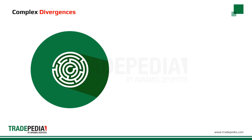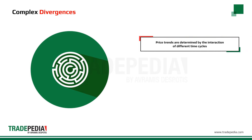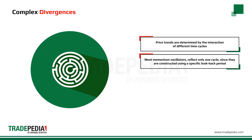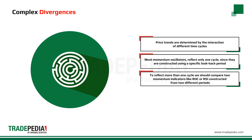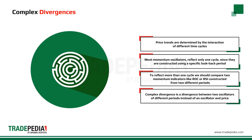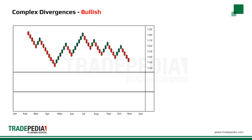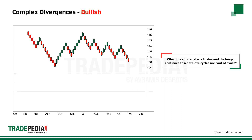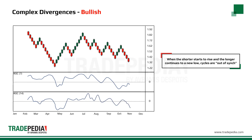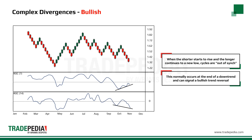Complex divergences. Price trends are determined by the interaction of different time cycles. Most momentum oscillators reflect only one cycle, since they are constructed using a specific look-back period. To reflect more than one cycle, we should compare two momentum indicators — like ROC or RSI — constructed from two different periods. The complex divergence is a divergence between two oscillators of different periods, instead of an oscillator and price. Compare two time spans separated by a substantial interval to reflect different time cycles, for example 7 and 14 periods. When a shorter period indicator bottoms and starts to rise towards zero while the longer continues lower to new lows, the two cycles are out of sync. This normally occurs at the end of a downtrend and can sometimes signal a bullish trend reversal.